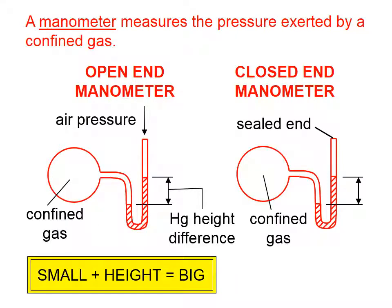For open-end manometers, this equation applies: small plus height equals big. Let's say you have a small quantity, and you want it to be equal to a bigger quantity. You're going to have to add something to the small quantity in order to make that happen. In this equation, the height difference is right there. Either the confined gas pressure is small or it's big, and the air pressure is either small or big.